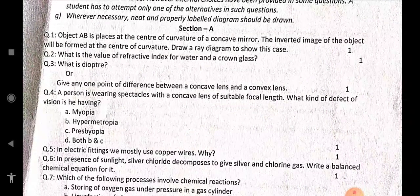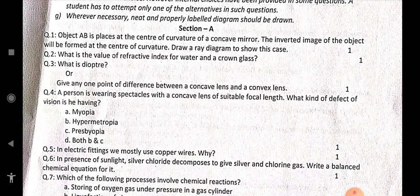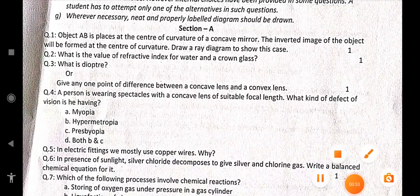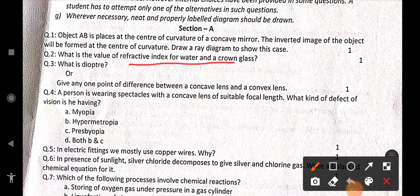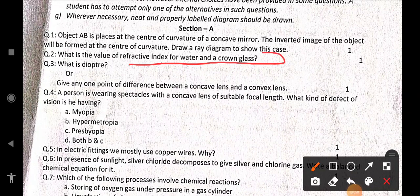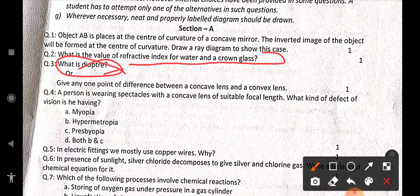Now here is the first question. You will leave it because you have to draw a ray diagram over here. Then what is the value of refractive index for water and crown glass? What is diopter? You can easily get it. I mean you will get this in the book.